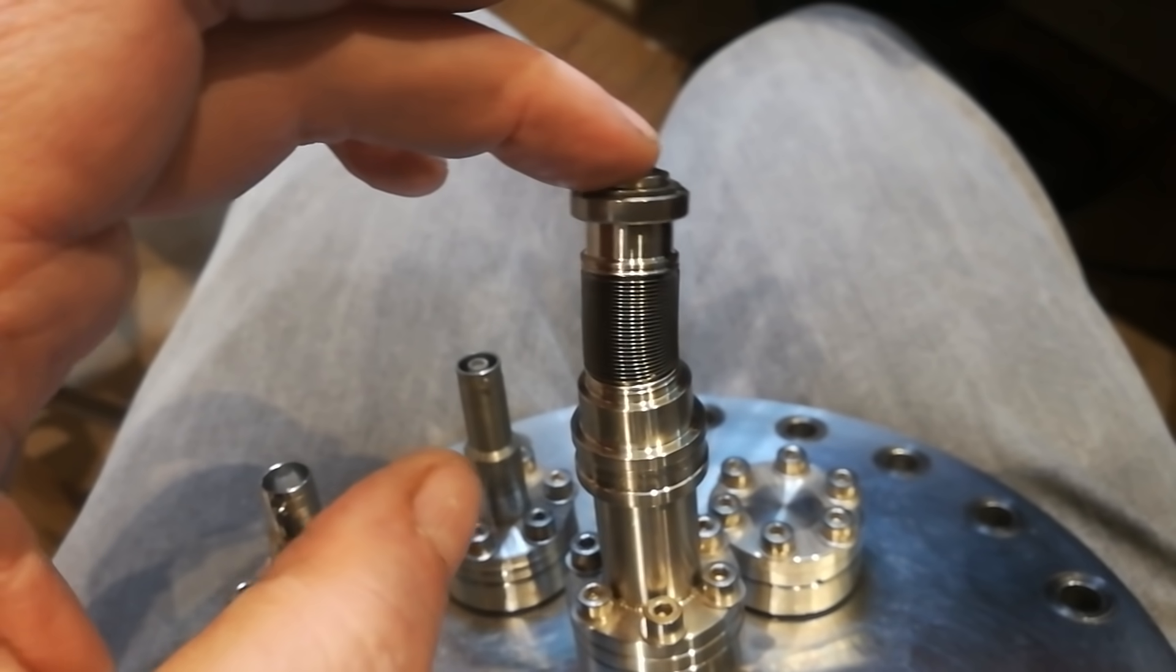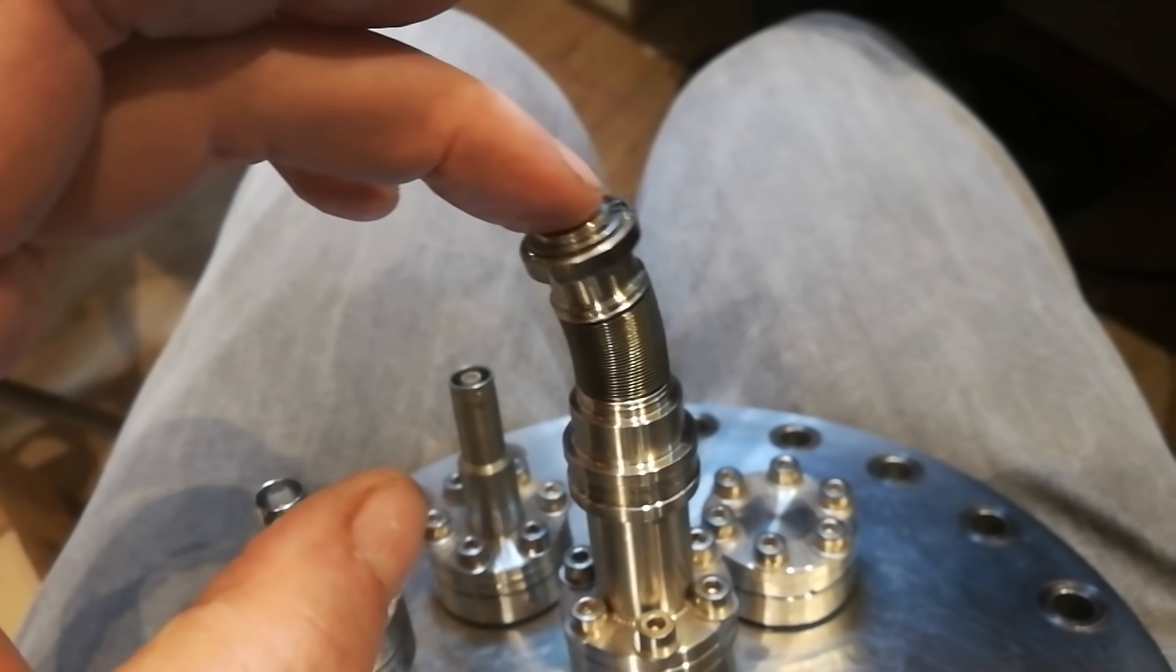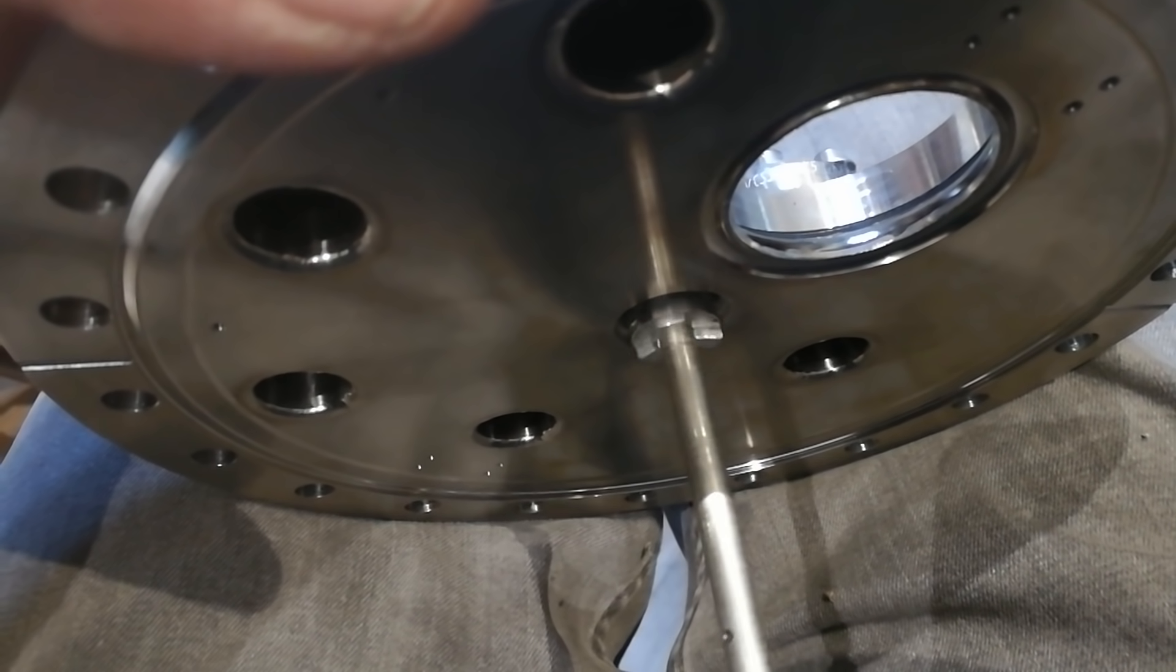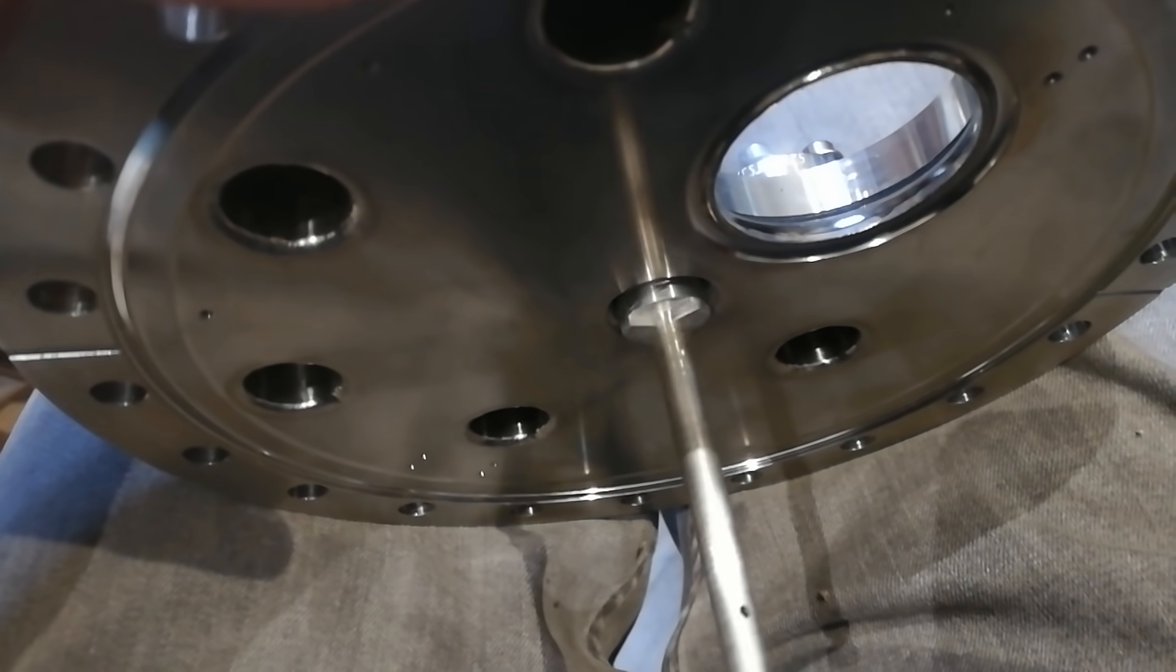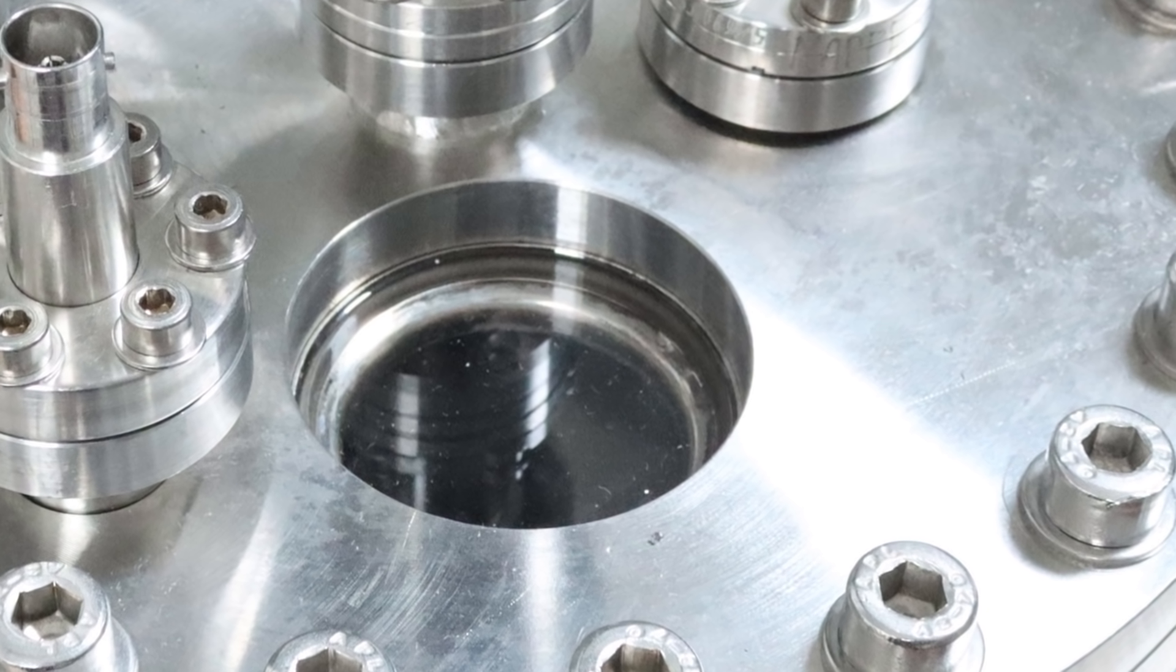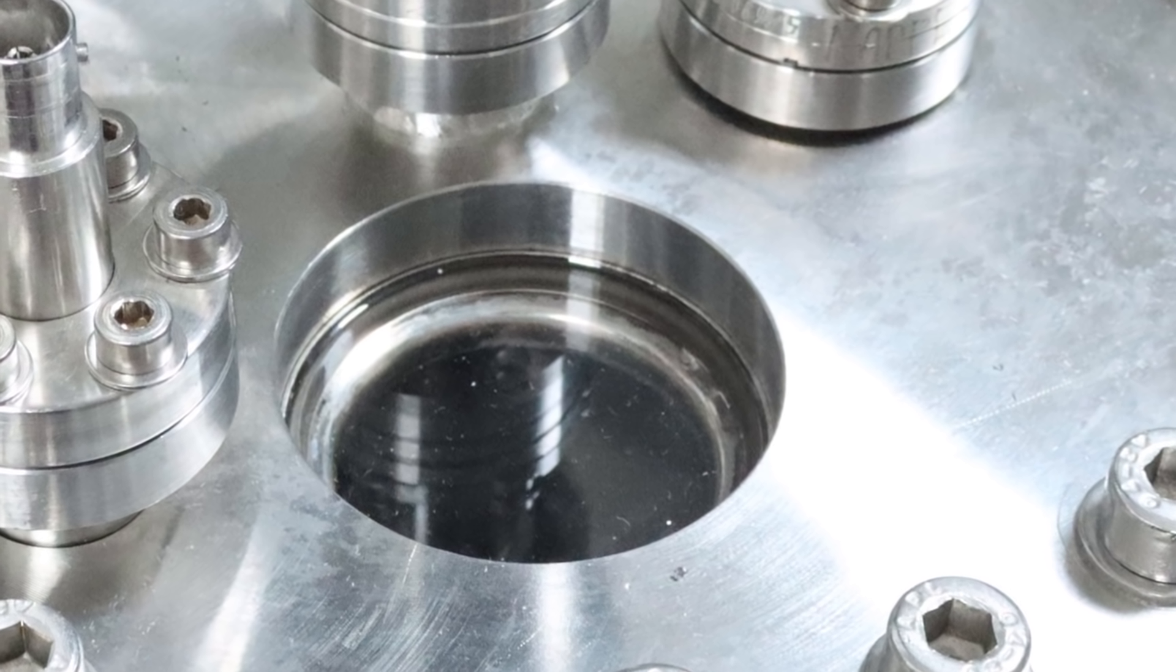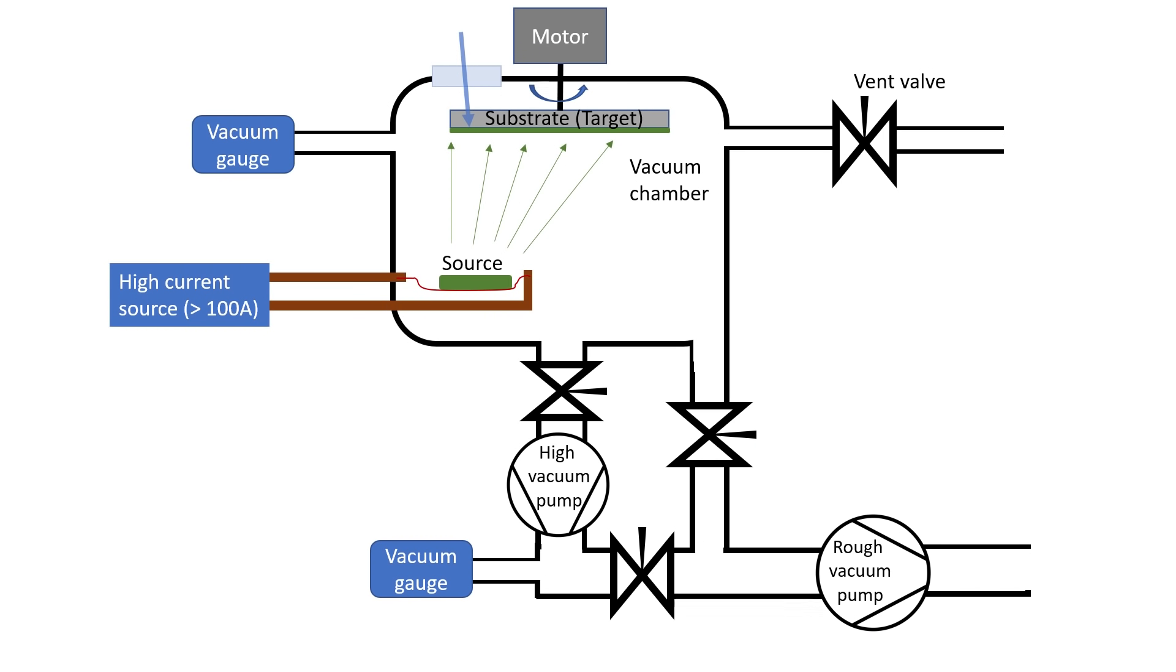Another piece of functionality is a rotation mechanism that can either be used to achieve a better layer uniformity or can serve as a shutter. An optical window allows for monitoring of the optical properties of the layers while evaporating. And for configurations where that is not really feasible, for example because the substrate is non-transmissive, I also added a quartz microbalance to the chamber.